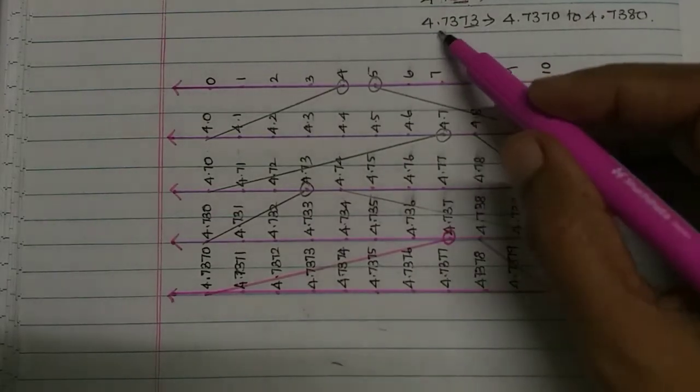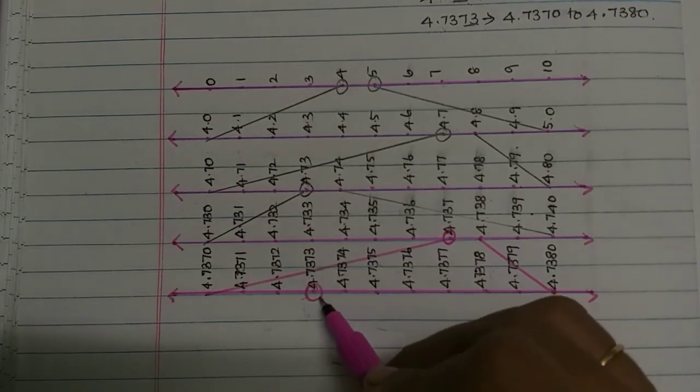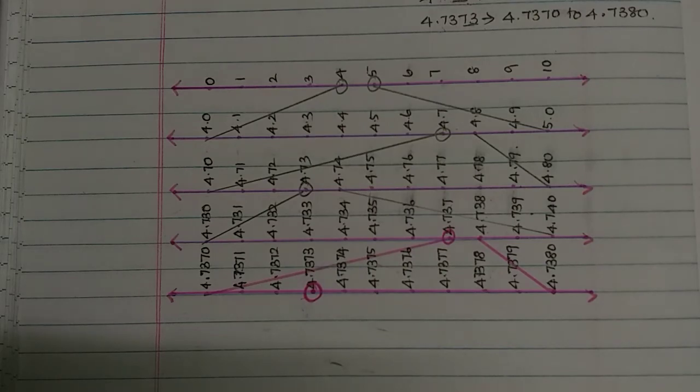So last, 4.7373, so where is it? 4.7373 here. So this is the location of 4.7373, okay, that's all.